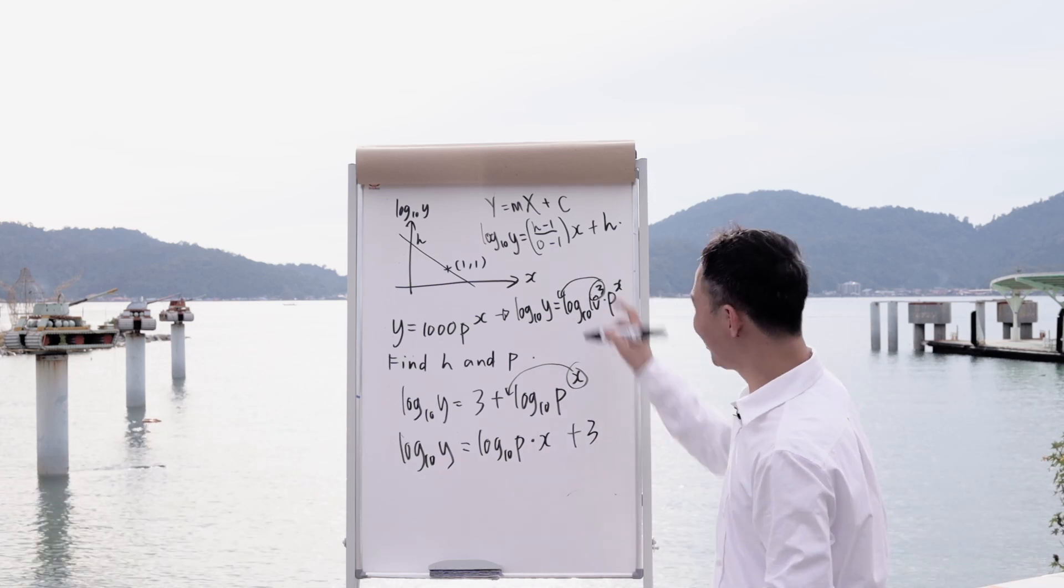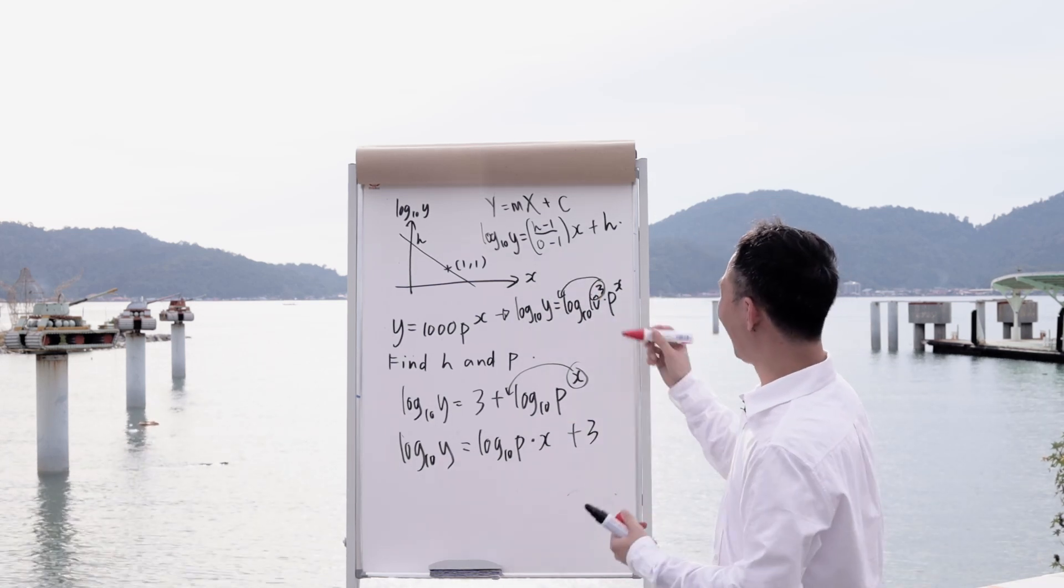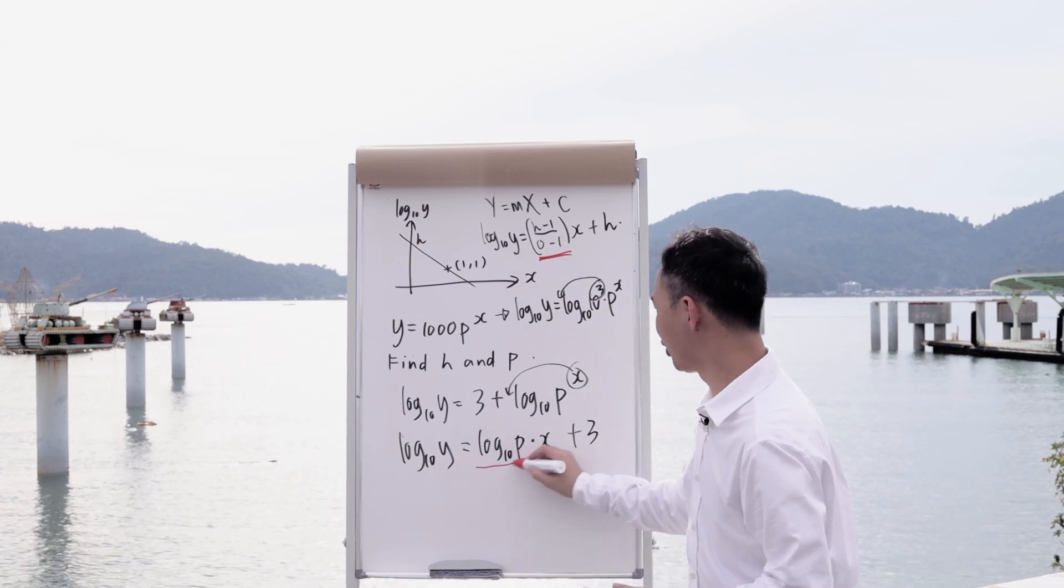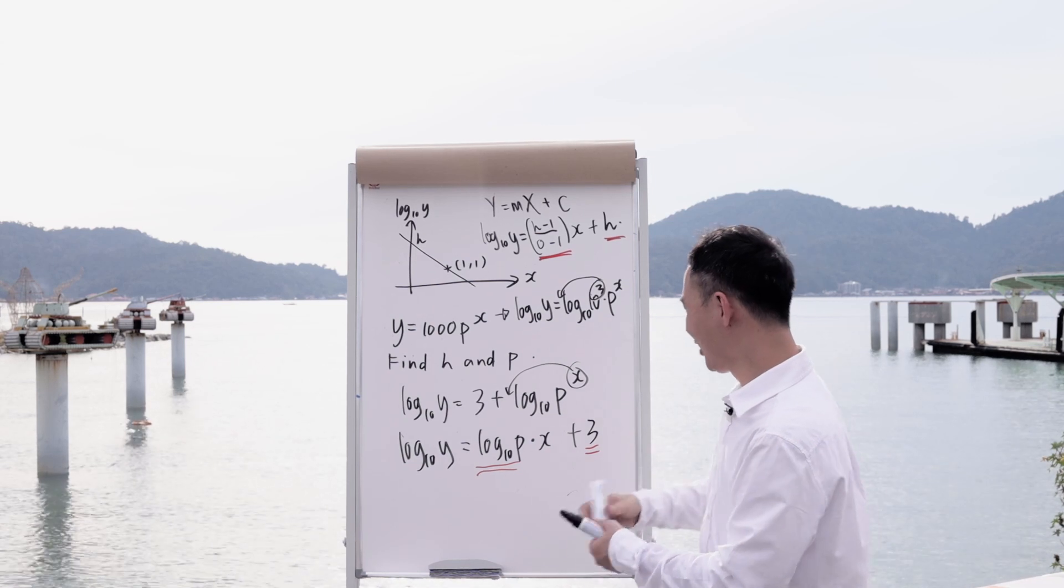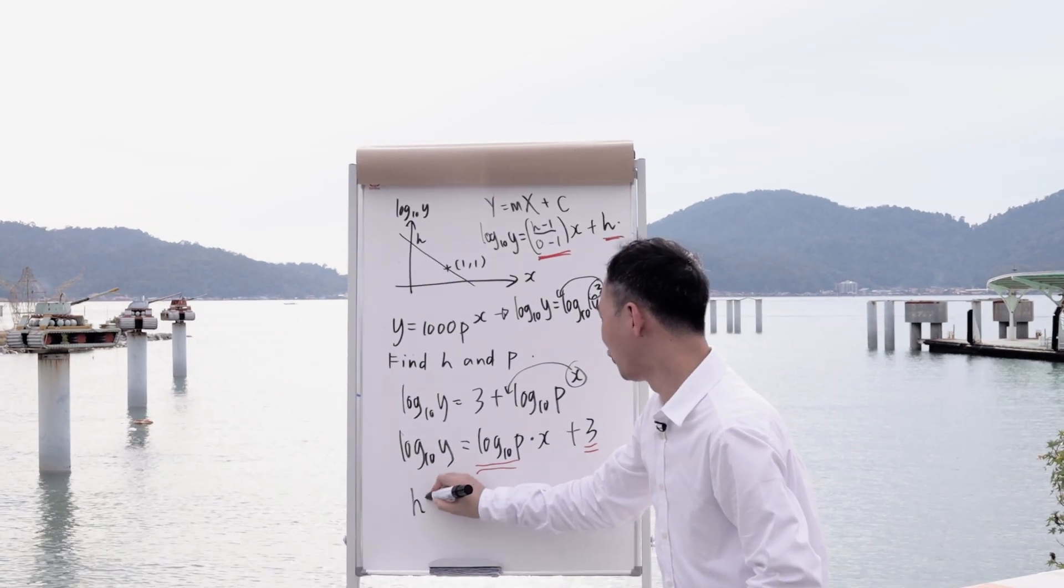So you can see my equation and this equation look exactly the same. So right now, I can easily know this is my gradient, which is log 10p. And this is my vertical intercept, which is 3. So from here, I easily know my answer of h, which is 3.